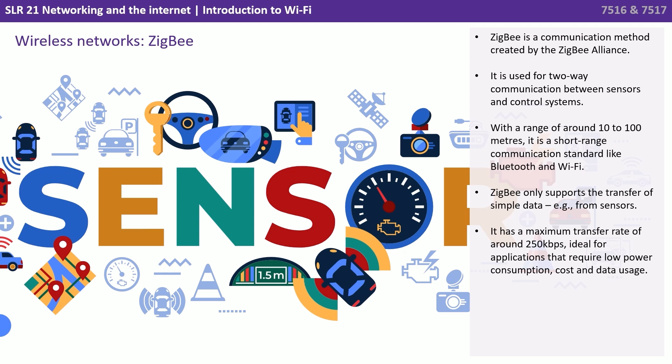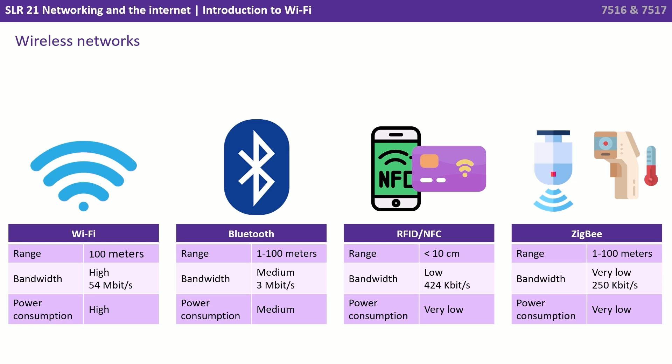Zigbee is a communication method created by the Zigbee Alliance. It's used for two-way communication between sensors and control systems. With a range of around 10 to 100 metres, it is a short range communication standard like Bluetooth and Wi-Fi. Zigbee only supports the transfer of simple data, such as from sensors, and has a maximum transfer rate of around 250 kilobits per second. It's ideal for applications that require low power consumption, low cost, and low data usage. Here is a summary table showing the four main types of wireless technology and their main features.